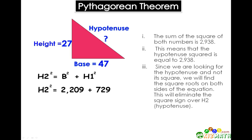Now if we add those two numbers together, we get H2² = 2,938. To find the answer, we must take the square root of each side of the equal sign.